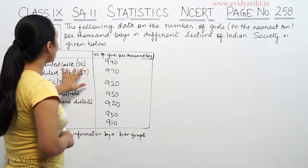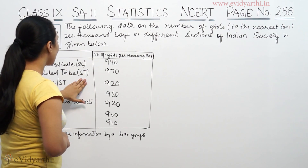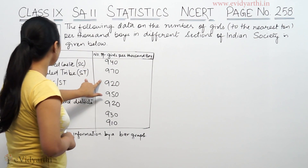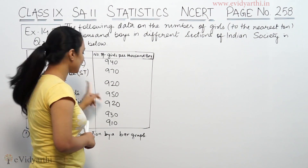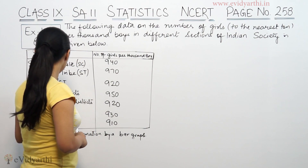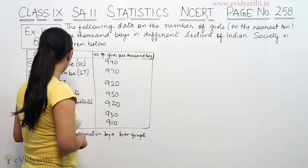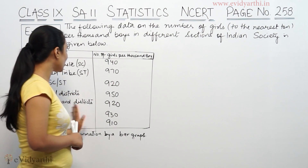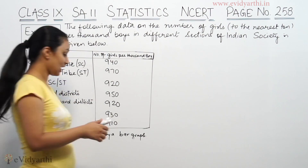The data is: SC is 940, ST is 970, Non-SC/ST is 920, backward districts is 950, non-backward districts is 920, rural is 930, and urban is 910.